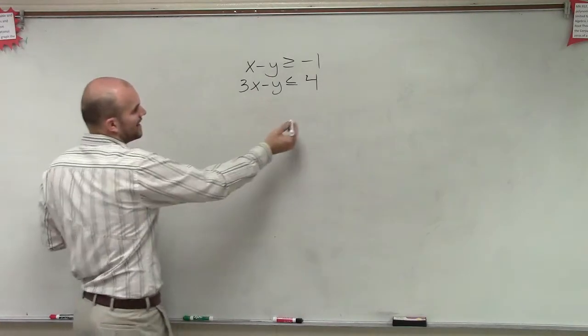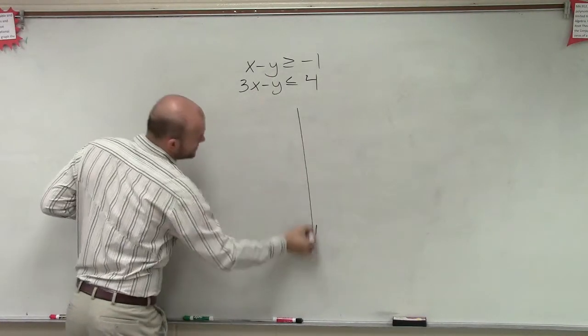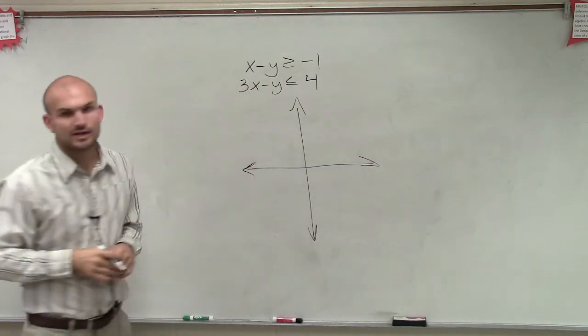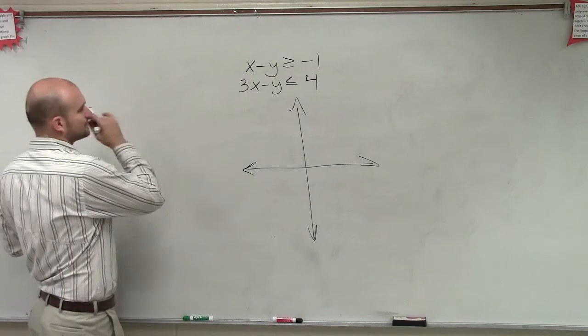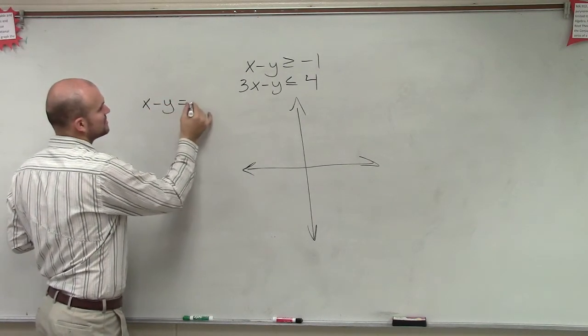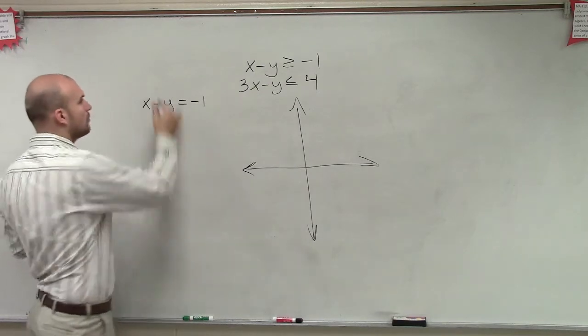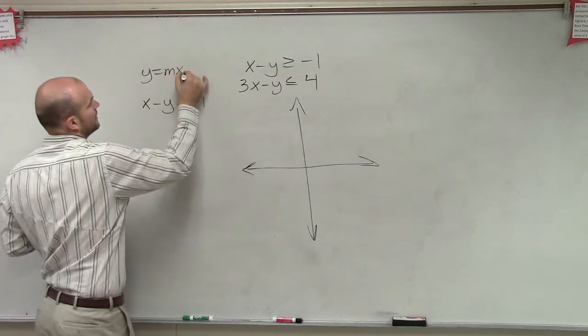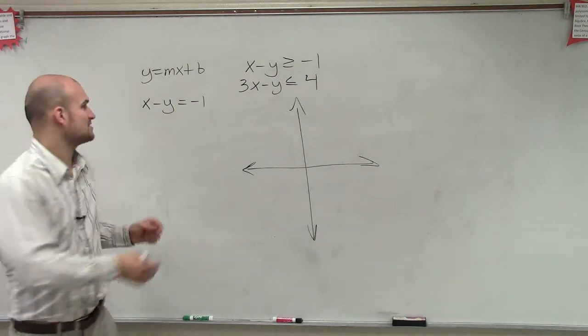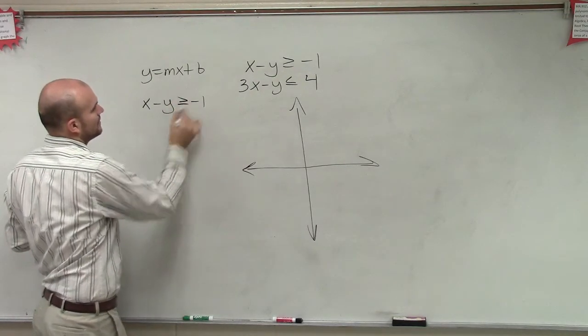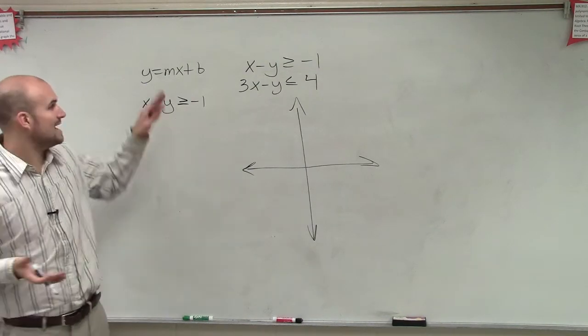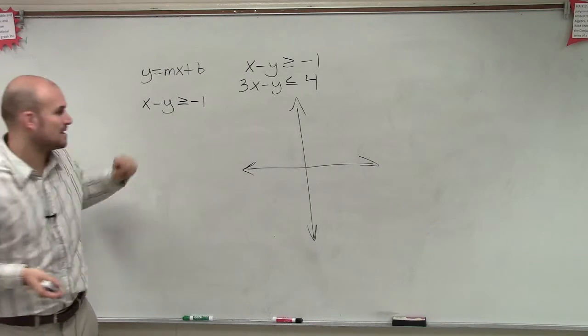So when we have equations, there's two different ways we talked about how to graph them. The first way is to set it up into y equals mx plus b, which we call slope-intercept form. Because if you can put it in this format where you've solved for y, then you know what the slope and the y-intercept are. So I'm going to solve for y.